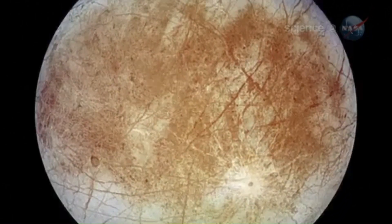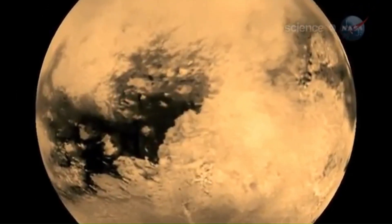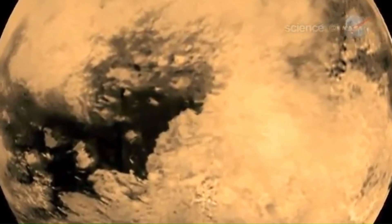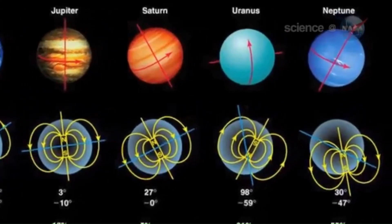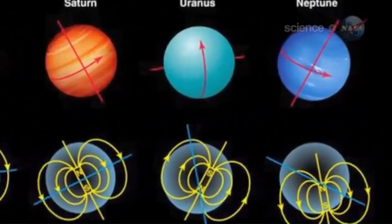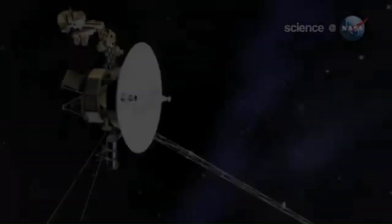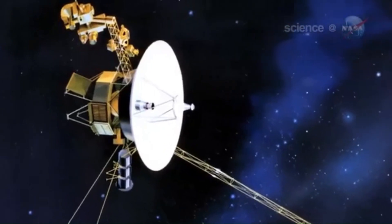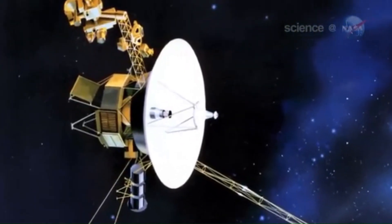Almost 46 years later, after exploring the solar system and beyond, one of those spacecraft, Voyager 2, has lost contact with Earth. All communication with Voyager 2 goes through NASA's Deep Space Station 43, a 70 meter radio dish at the Canberra Deep Space Communication Complex operated by CSIRO.